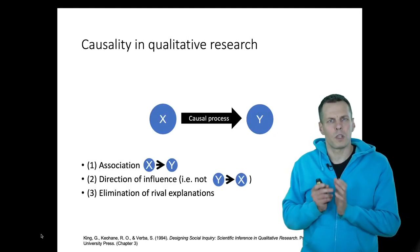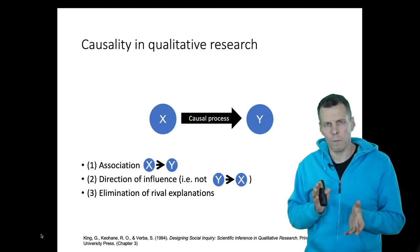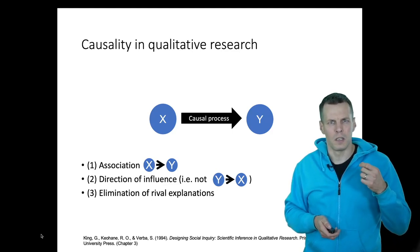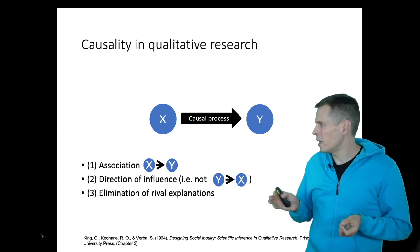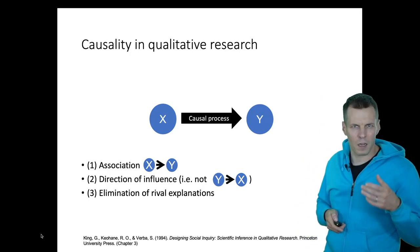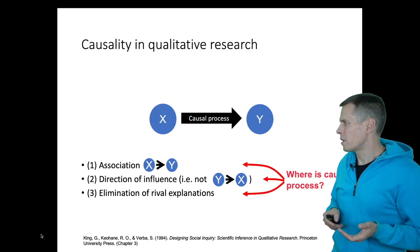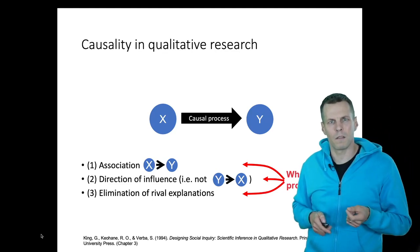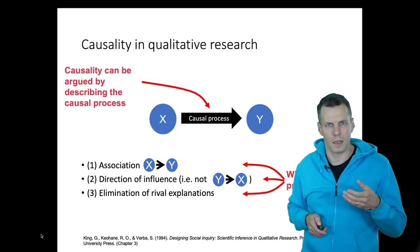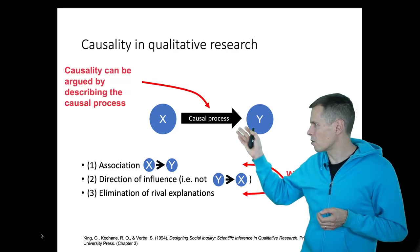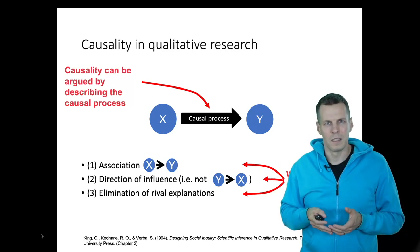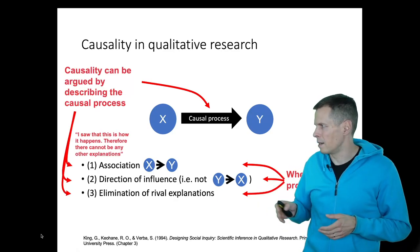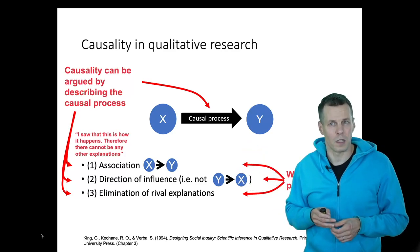Qualitative researchers also take a different approach to making causal claims. If we have a realist type case study where we want to make propositions that contain claims about causality, we don't focus on the three conditions that a quantitative researcher would obsess about, because causality is a process and there is no causal process in those conditions. Instead, a qualitative researcher goes and observes the causality in action and argues causality by describing the causal process. A qualitative researcher might say 'I saw it happening, this is how it happened,' and that basically eliminates the need for probing causality using those three conditions.